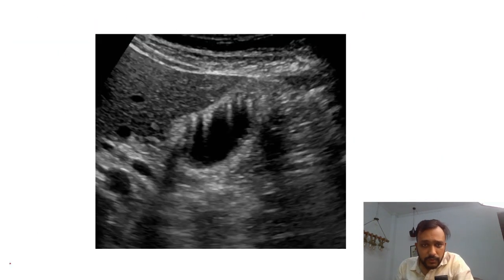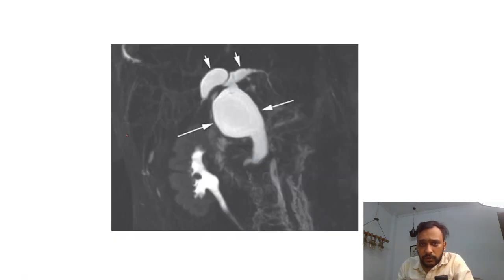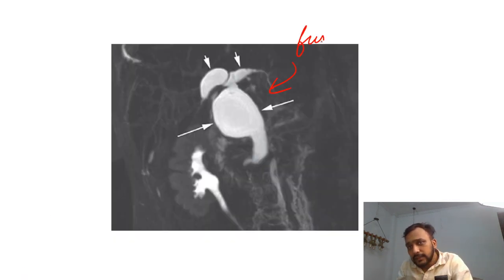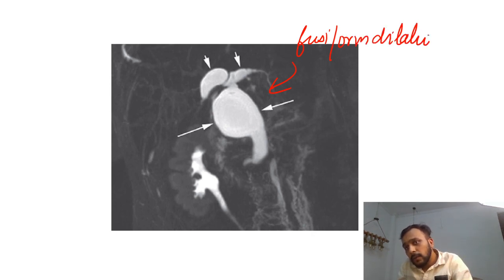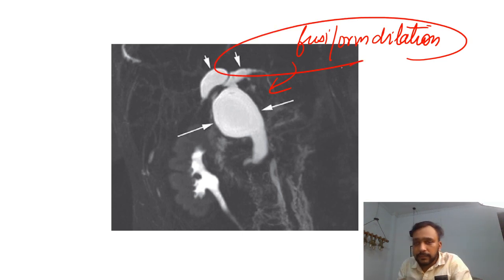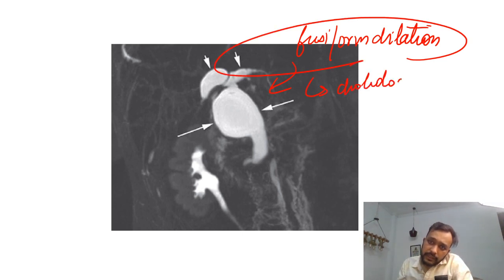Two other important images: here you can see fusiform dilatation of the common hepatic duct. This is a case of choledochal cyst.